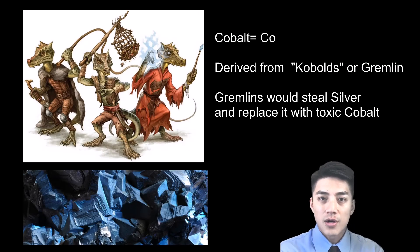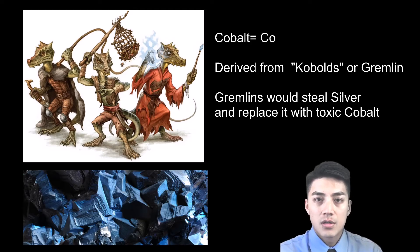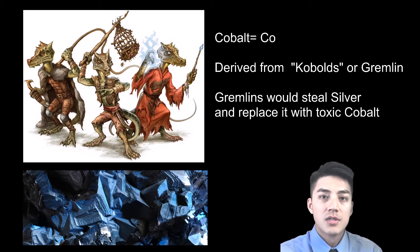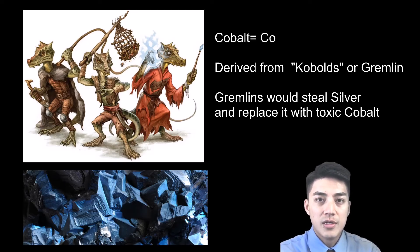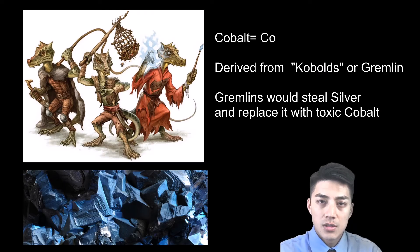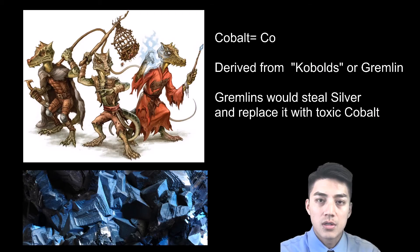The men who worked the silver mine shafts would run across a toxic metal called cobalt in their search for silver. They called it cobalt, or cobald, which means gremlin. They believed these gremlins came in, stole the silver, and replaced it with a less valuable and more toxic metal called cobalt.